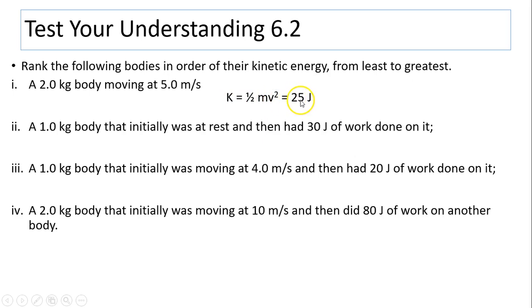So the first one is this: K equals one half mv squared. Second one was initially at rest. So K equals W plus K1, the work done to the body plus its initial kinetic energy. So we have 30 joules.